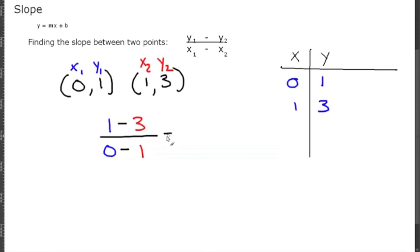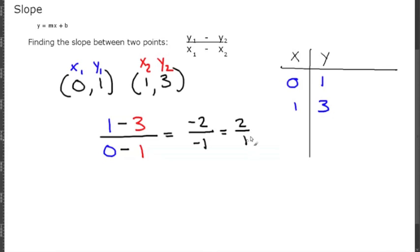Solving this out: 1 minus 3 is negative 2, and 0 minus 1 is negative 1. A negative over a negative is a positive, and 2 divided by 1 is 2 — which was our slope in the original equation as well.